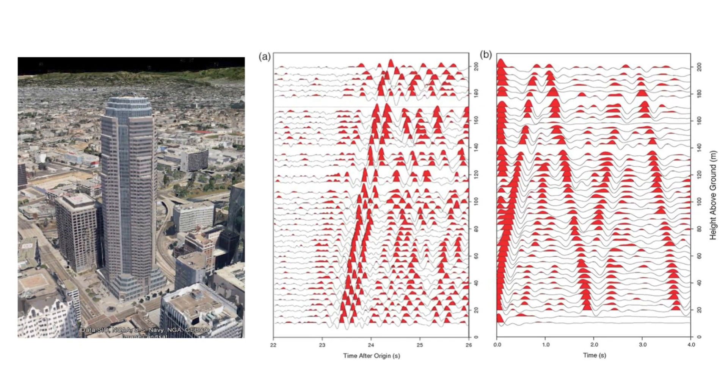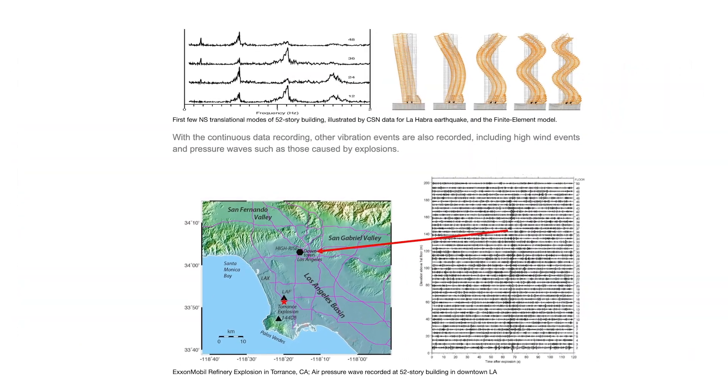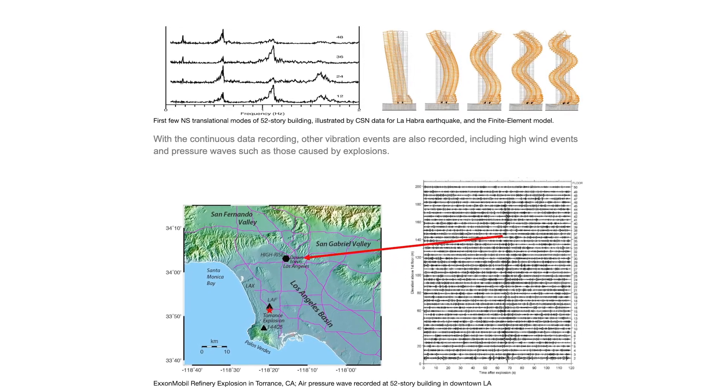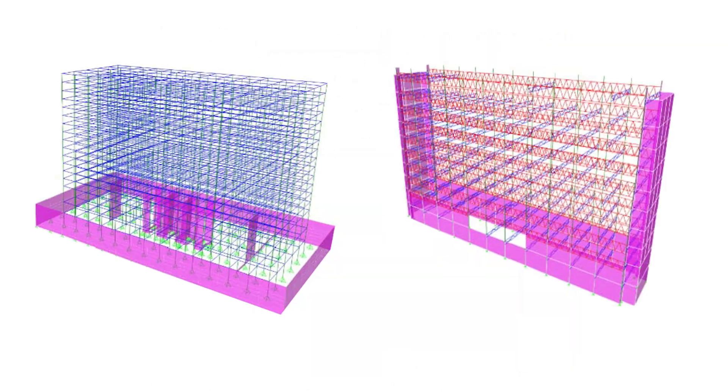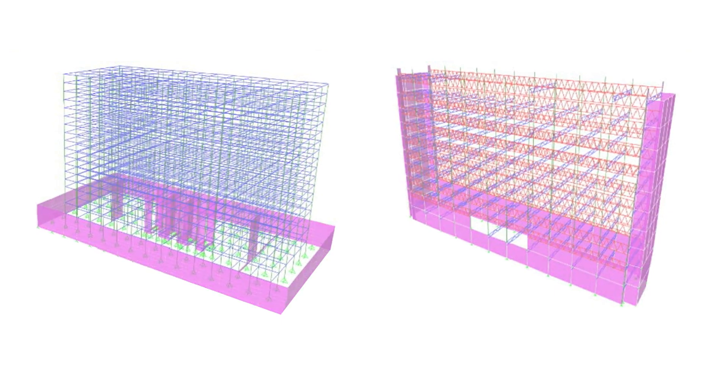That can then inform the building code in a way that is specific to the areas where you recorded the data. Building codes take into account the potential for shaking — for example, in a bedrock area versus a soft soil area versus a sedimentary basin area — and you would want to design your buildings differently depending on what kind of environment you're in.